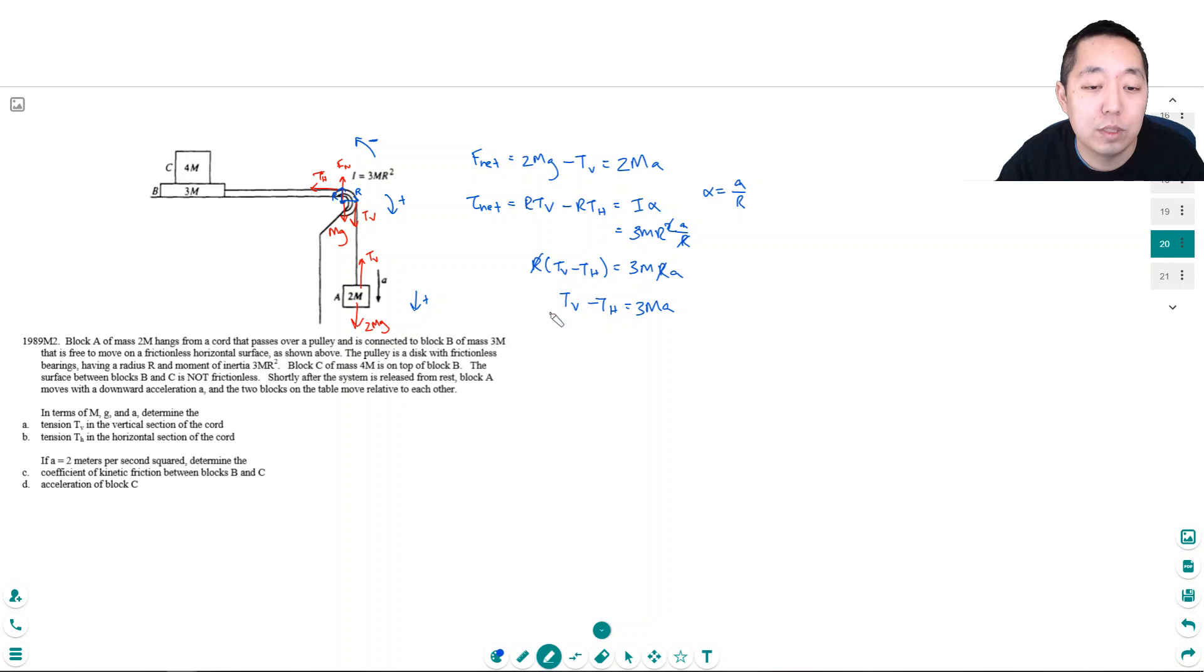Now I've introduced a new unknown. Tv... Sorry, Th. Before I had Tv and A as my unknowns. Now I have Th as my unknowns. I need another equation. And this thing will thankfully probably do it.